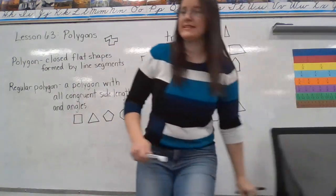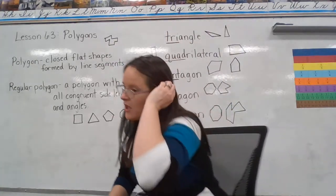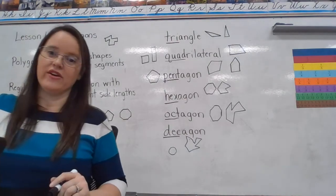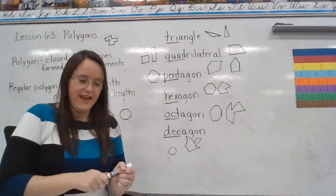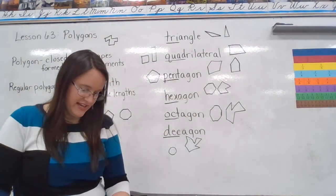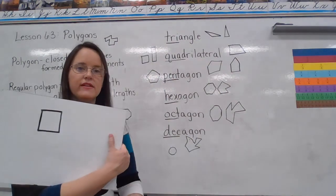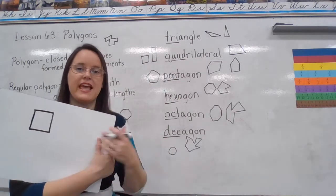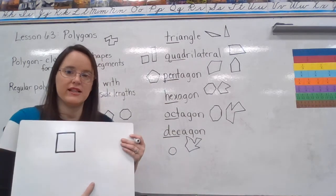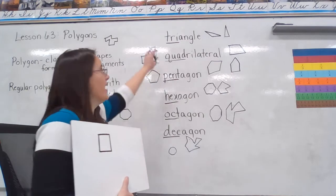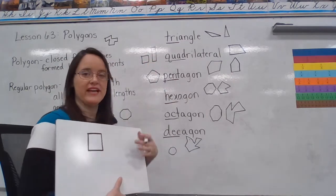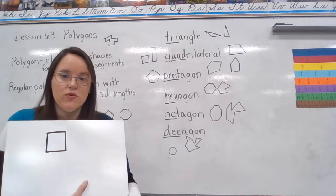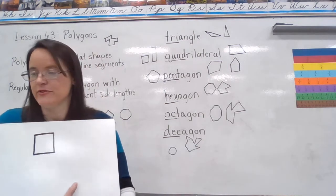We have a couple of practice problems. What kind of polygon is a square? A square has four sides — which of these words describes a four-sided polygon? Quadrilateral. So our answer is quadrilateral. A square is a specific type of quadrilateral.